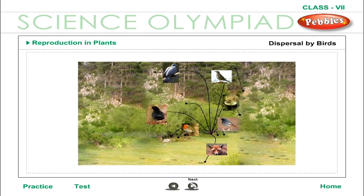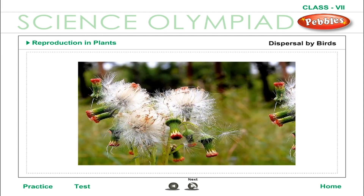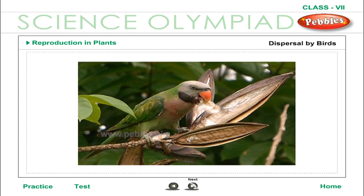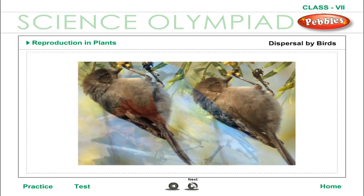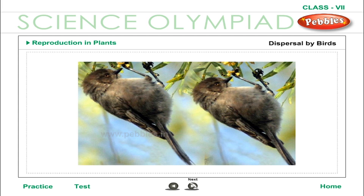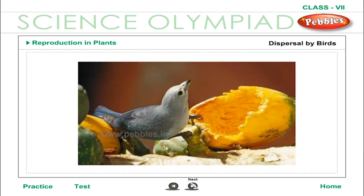Dispersal by Birds: Most fleshy and brightly coloured fruits are designed to be eaten by birds and mammals. The taste and nutrition attract animals to come back again and again. The seed may pass out in the faeces or may be thrown away. Some birds eat fruits whose seeds stick to their beaks and are then rubbed off somewhere else. Seeds of other fruits pass intact through a bird's digestive tract.